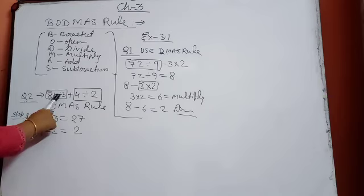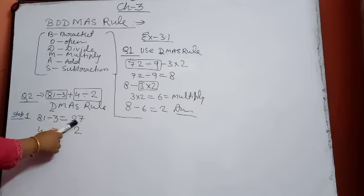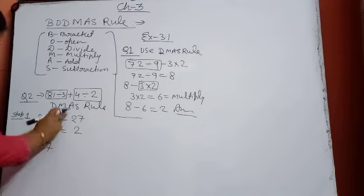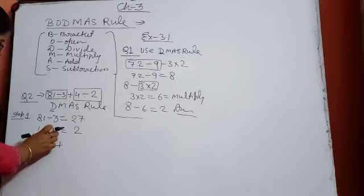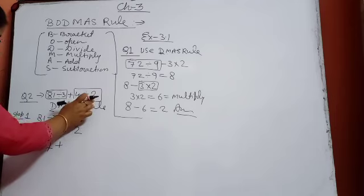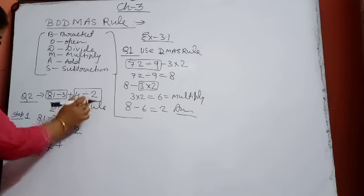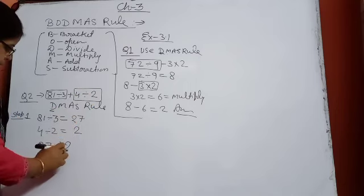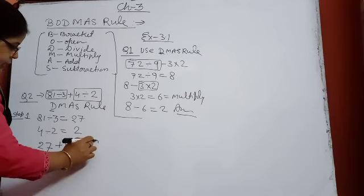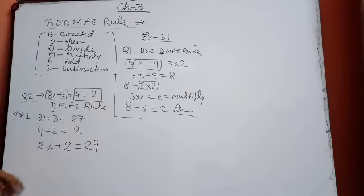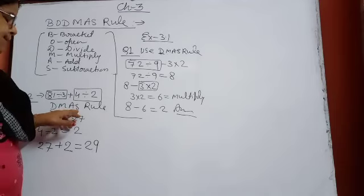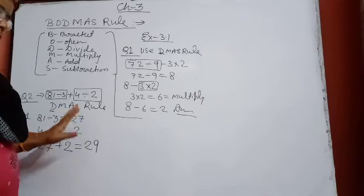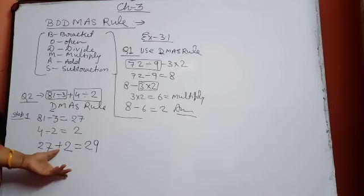In place of 81÷3, write 27, then plus sign, and in place of 4÷2, write 2. Now 27 plus 2. After division, next is addition, so 27 plus 2 equals 29. Here there is no subtraction sign after addition, so up to here we will do, and that will be your solution.